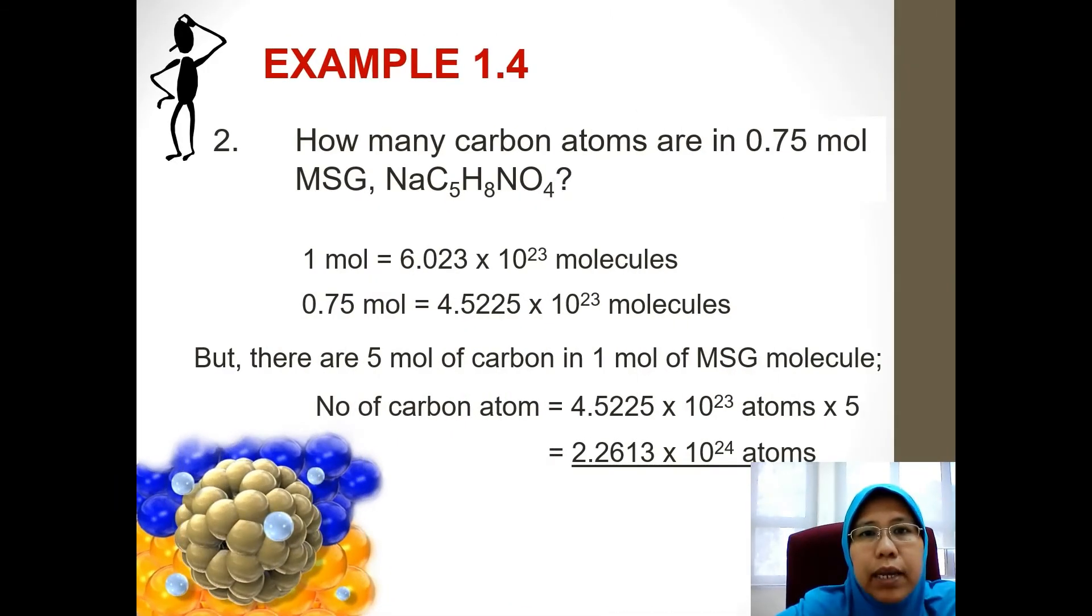The next question is how many carbon atoms are in 0.75 mole of MSG? The molecular formula for MSG is given to you here, C5H8NO4, meaning that you are going to find firstly the number of mole for MSG molecule, that is 4.5225 times 10 to the power of 23 molecules. And after that you want to know how many moles of carbon are there in one mole of MSG molecule. It's five, given in the formula, right? So you multiply the number that you get earlier with five and then you'll get 2.2613 times 10 to the power of 24 atoms. Use four decimal places for this question. Also you will get two marks. Good.